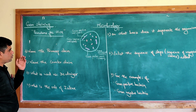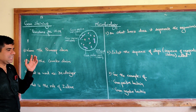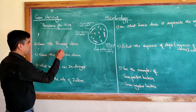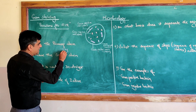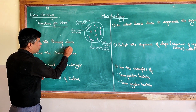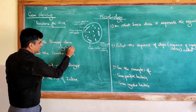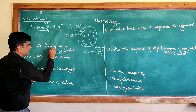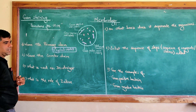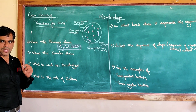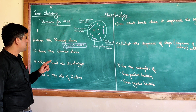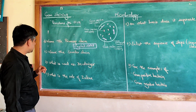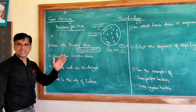The first question: name the primary stain for gram staining. The primary stain is a basic dye, a violet-colored dye called crystal violet. Crystal violet is the one which you apply first in gram staining.